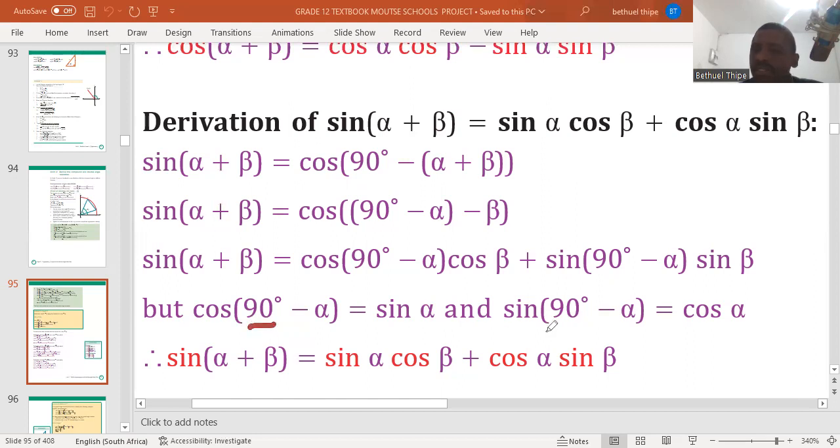If it was 180 or 360, we're not going to change cos and sine co-function. Even if it was 360, we're not going to change cos and sine co-functions.